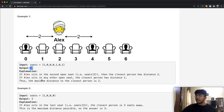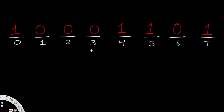Now let's look at a custom example to talk through the solution. We have a list with indices zero through seven — a total of eight seats. The values in white represent the indices at the bottom. The goal is to find the best seat for Alex where he has the most distance between himself and other people.